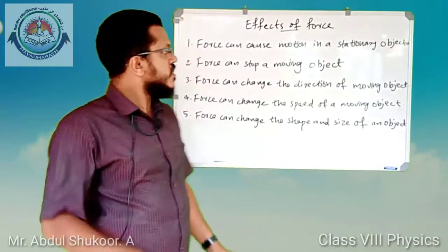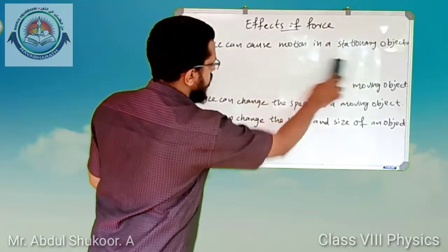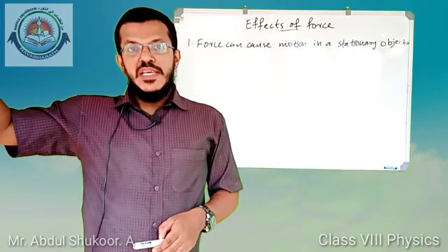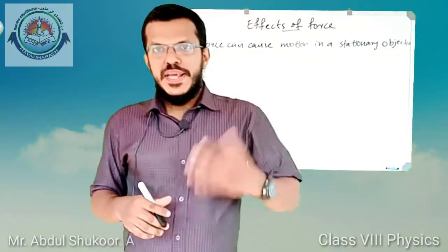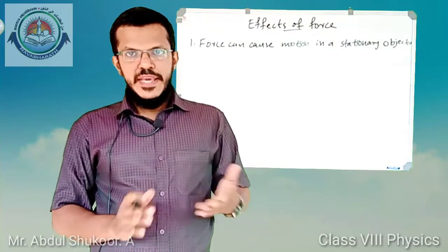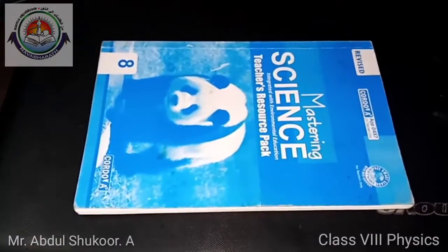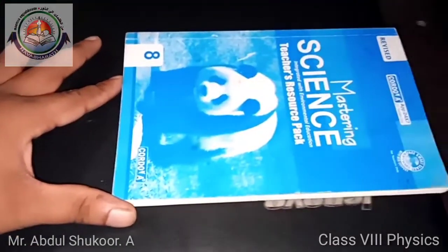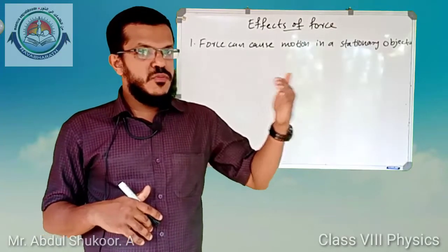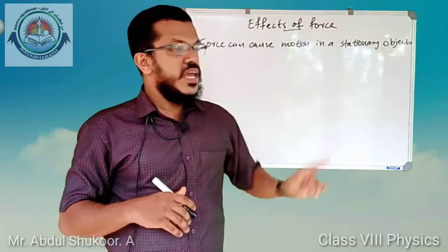First, force can cause motion in a stationary object — force can change the state of rest into motion. For example, a book lying on a table can be moved by applying a push or pull. Initially the book is stationary; if you apply a force, it changes from state of rest to state of motion. Similarly, if you apply a force on a chair that is at rest, the chair will move.